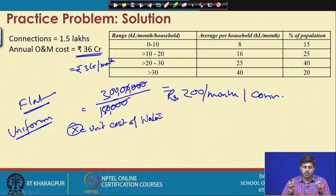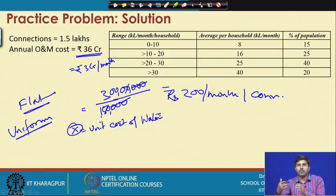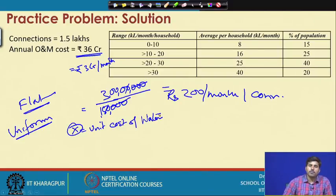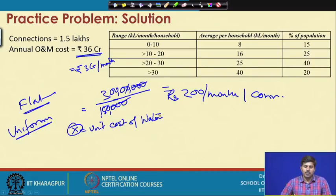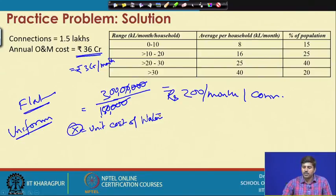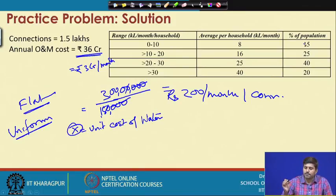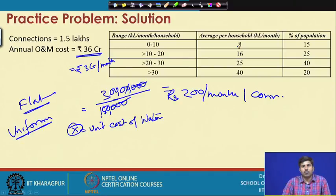To find total monthly consumption y, we use the consumption table. 15% of 1,50,000 connections (= 22,500) use 8 kL/month. So their contribution is 8 × 0.15 × 1,50,000 kL. Similarly, the second group contributes 16 × 0.25 × 1,50,000, the third group 25 × 0.40 × 1,50,000, and the fourth 40 × 0.20 × 1,50,000.